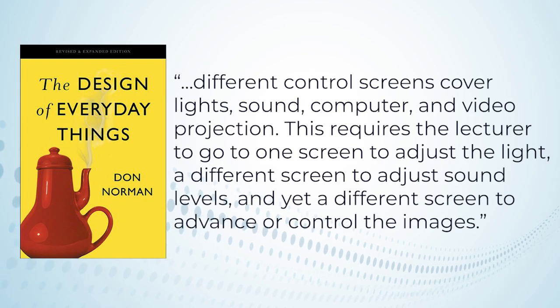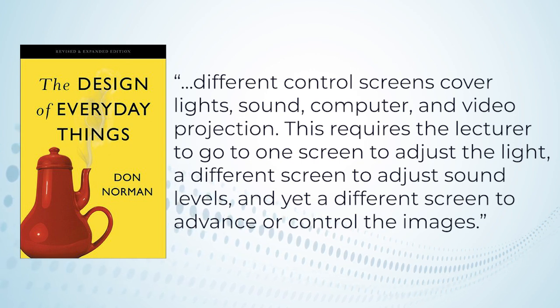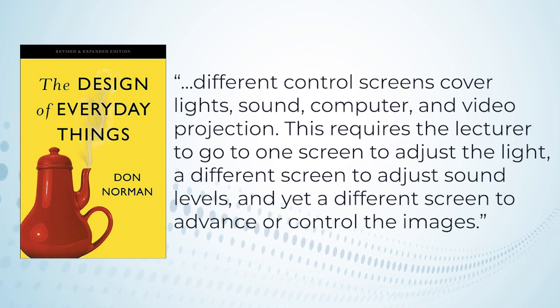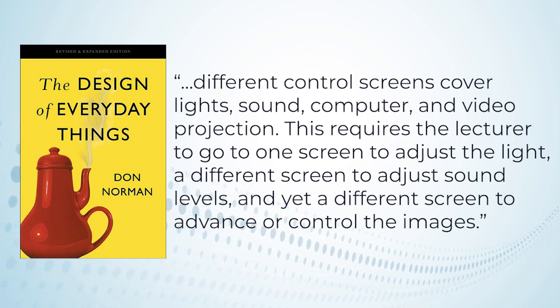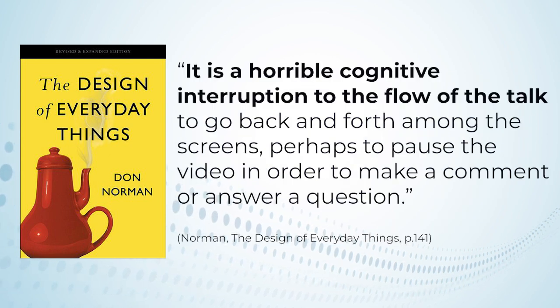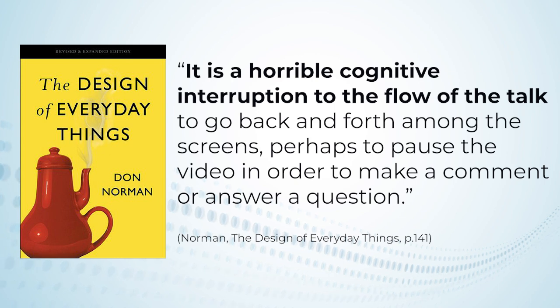In his book 'The Design of Everyday Things,' Don Norman — considered one of the fathers of user-friendly design — actually talks about an AV control system that failed to live up to that potential. He writes: 'Different control screens cover lights, sound, computer, and video projection. This requires the lecturer to go to one screen to adjust the light, a different screen to adjust sound levels, and yet a different screen to advance or control the images. It is a horrible cognitive interruption to the flow of the talk.' It's not really great, is it?